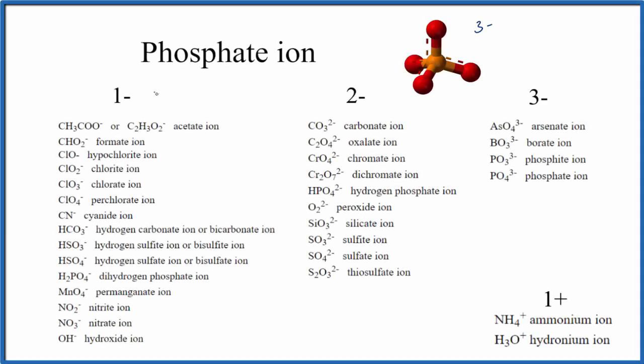In this video we'll write the chemical formula for the phosphate ion. Since it says ion, we know we're gonna have a positive or negative charge. We also note when we look at phosphate it ends in ATE, that means it's a polyatomic ion.